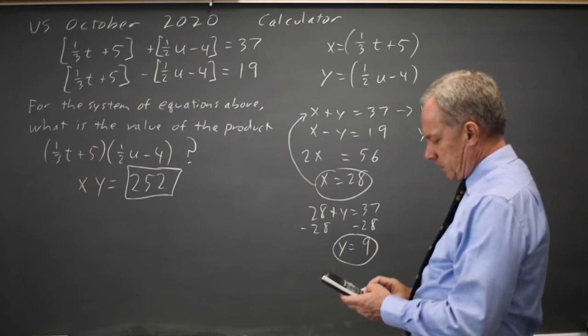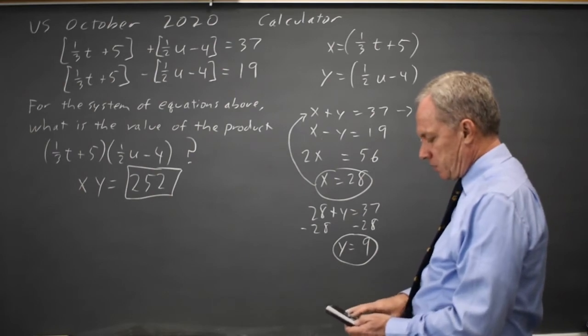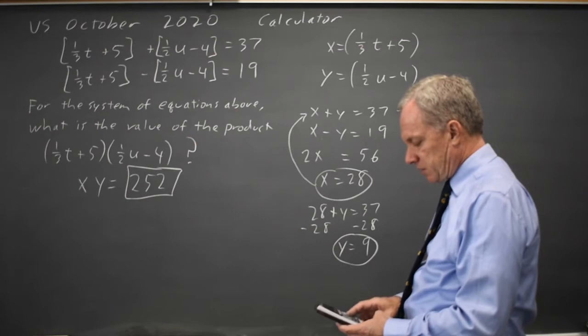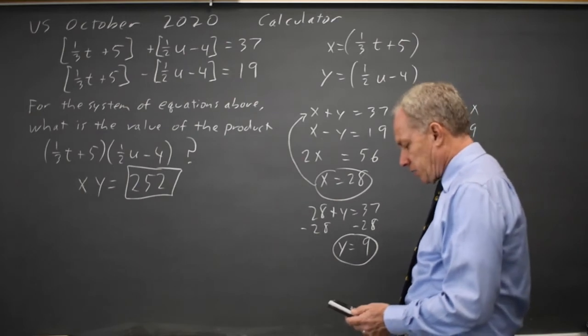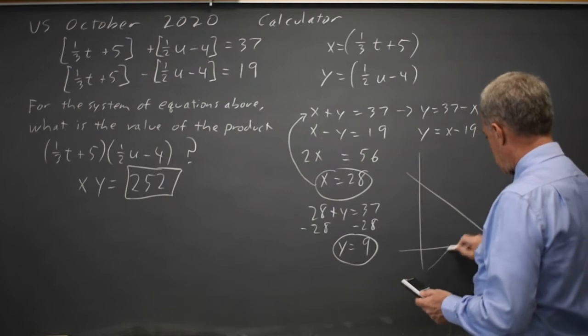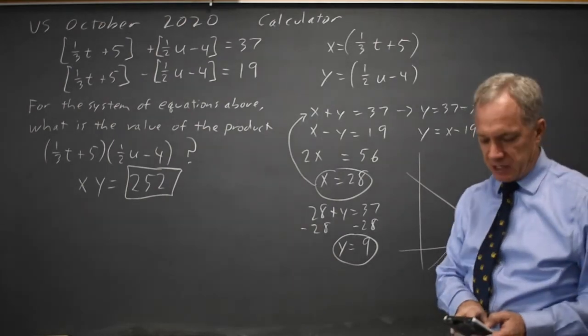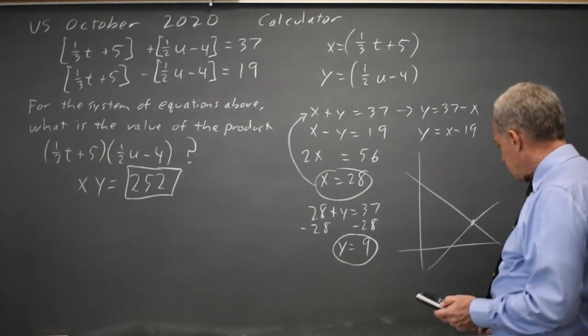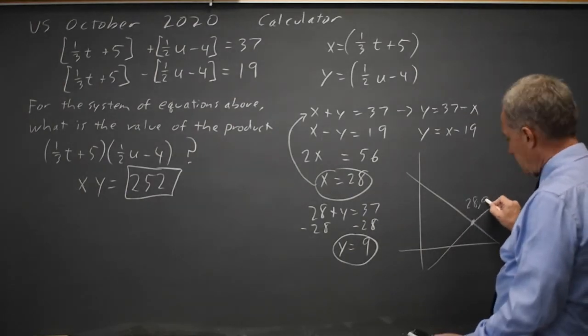37 minus x, and x minus 19. And I'll take my window to positive 50 for x and 50 for y. And the graph looks something like this. And if I use the intersect feature on a graphing calculator, which is not required, as you saw, I just did this by hand, I get x, y equals 28, 9.